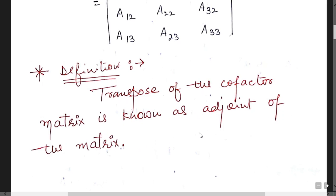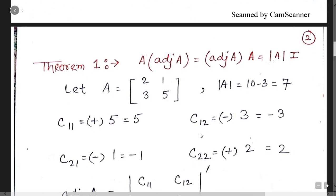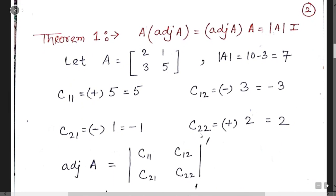The definition: the transpose of the cofactor matrix is known as the adjoint of the matrix. This is a very important result, often asked in examinations. Now the first theorem: if you multiply the matrix with its adjoint, or adjoint with its matrix, the result is the determinant multiplied by the identity matrix. Let us try to prove this. Suppose the matrix is [2, 1; 3, 5] — clearly its determinant is 10 minus 3, which is 7.